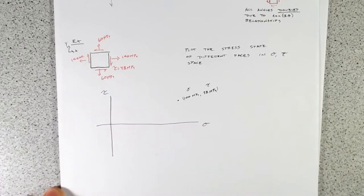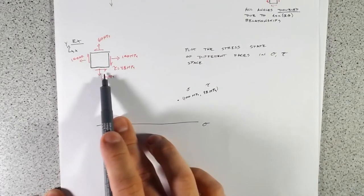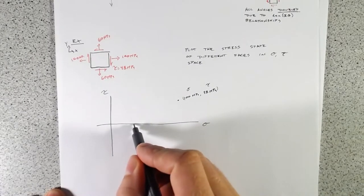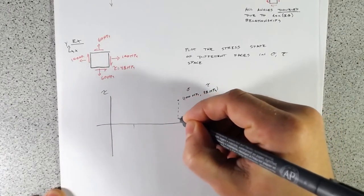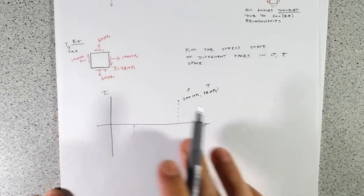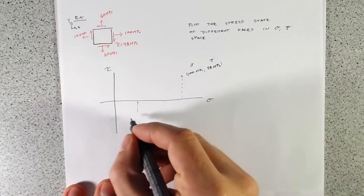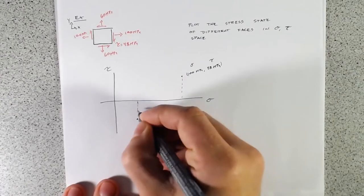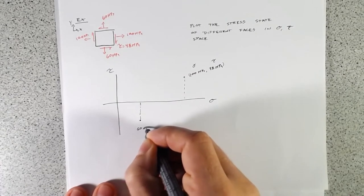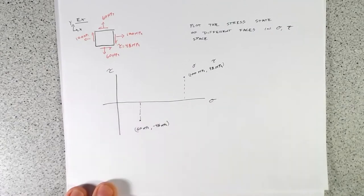If we go to the orthogonal face, we've got sigma equals 60 MPa and tau equals 48 MPa, but because that shear wants to spin the block anticlockwise, it's negative. So that point gets plotted down at (60 MPa, −48 MPa).